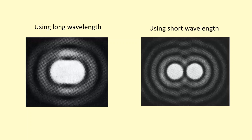Both of these are images of the same objects taken at the same magnification, but one is done using a long wavelength and one using a short wavelength. In the long wavelength one, the two objects appear as one, while in the short wavelength you can see them as two distinct objects. This is what resolution is.